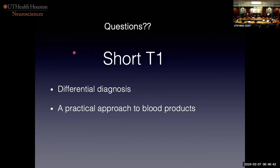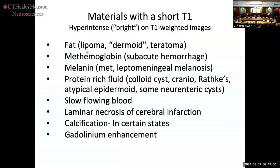Now I want to quickly move on for the residents. Most radiologists have a quick differential diagnosis for when they see something really bright on a T1-weighted image, and then blood products — because it's useful and it's going to be a boards question. So here's your list.